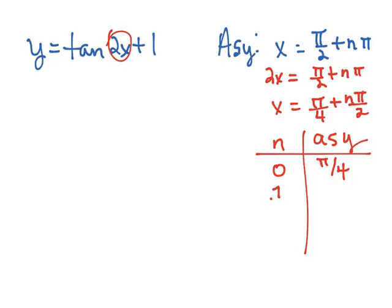If we were to let n be 1, then we would have π over 4 plus π over 2, which would be equal to, if we got a common denominator of 4, π over 4 plus π over 2.